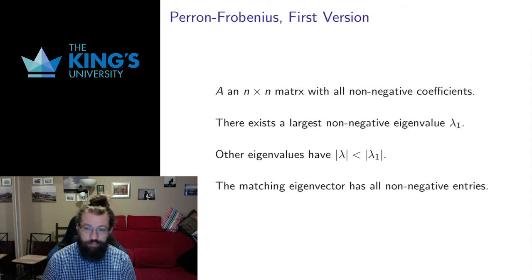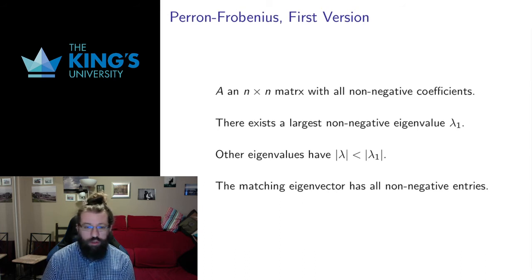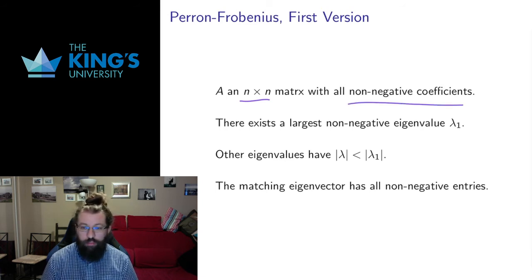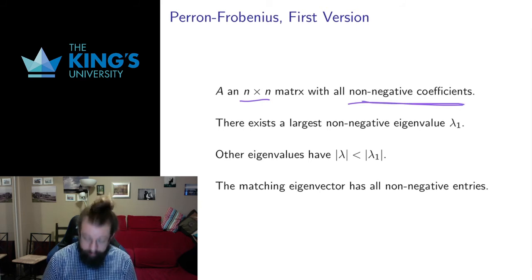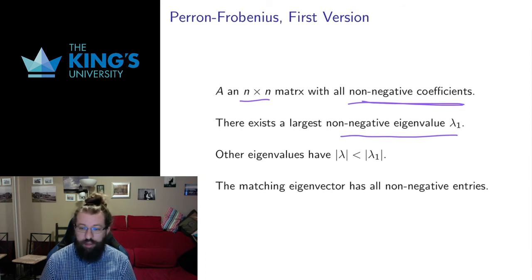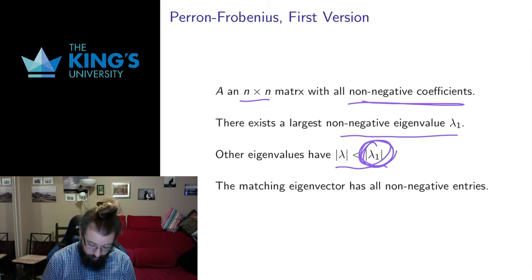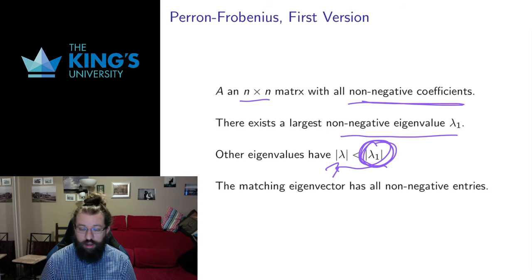The theorem is called the Perron-Frobenius theorem. I'll present two versions — this is the lighter version with fewer assumptions. If a matrix has non-negative coefficients — all entries are 0 or positive — then there is a largest non-negative eigenvalue, and all other eigenvalues are smaller than this eigenvalue in absolute value. This means the largest eigenvalue dominates all others.